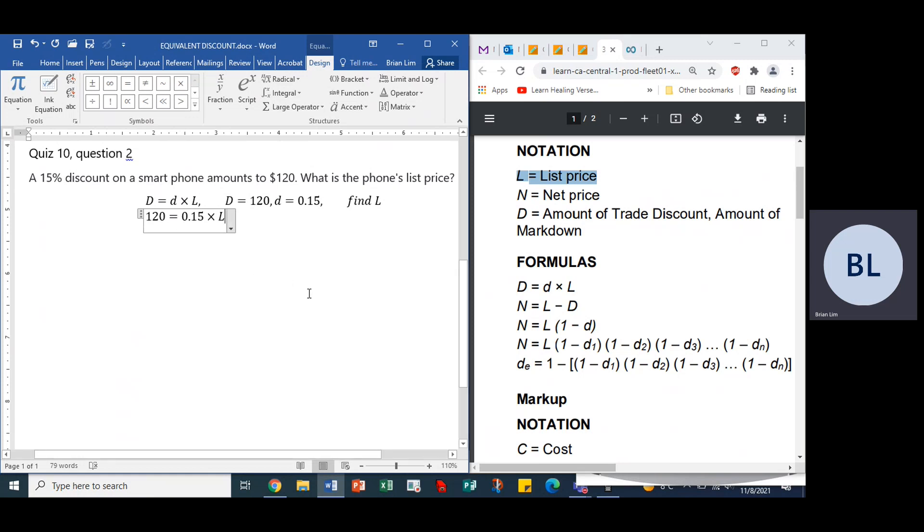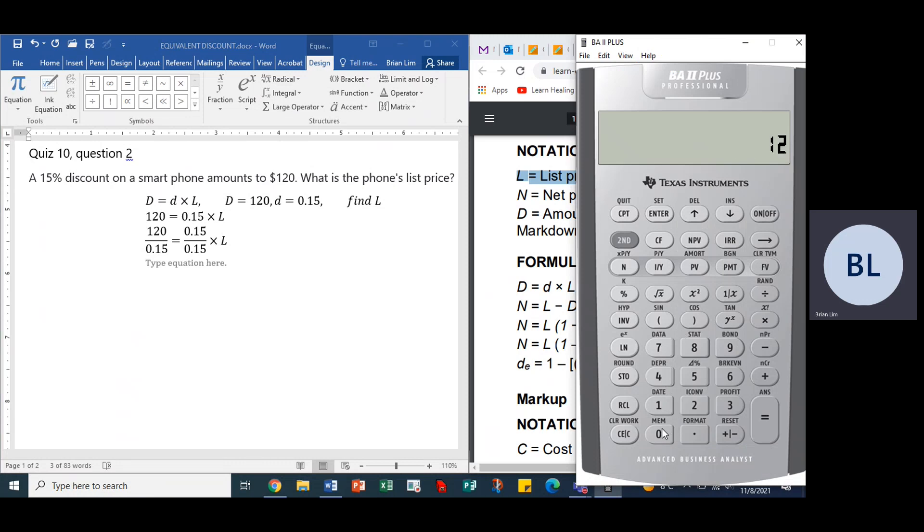Alright, so what do we do? Well, you could divide both sides by 0.15. That's one way of doing it. OK, you could say 120 divided by 0.15 is equal to 0.15 divided by 0.15, and then we multiply that by L. So that scenario will give us what? Well, 120 divided by 0.15. Let's use the calculator. 120 divided by 0.15 is equal to 800. The figure 800, 800 is equal to 1 times L.